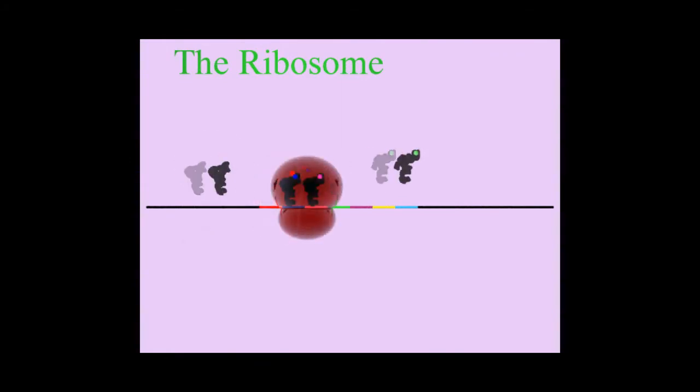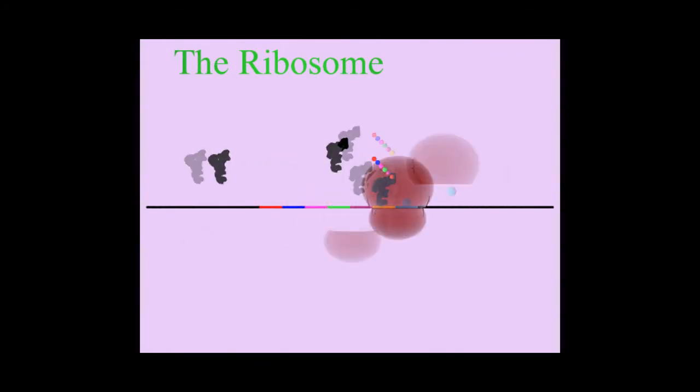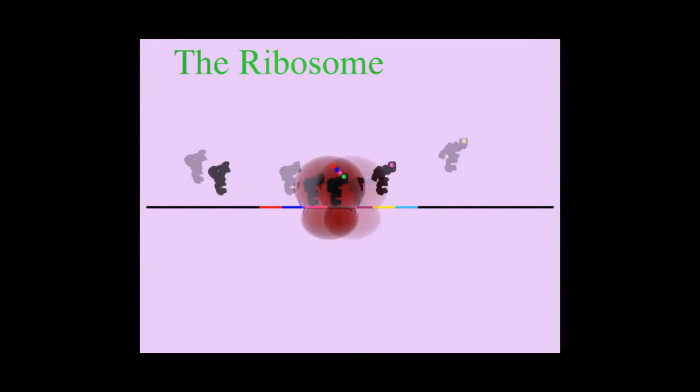The ribosome translates mRNA into a corresponding polypeptide chain made from amino acids carried by tRNA molecules.